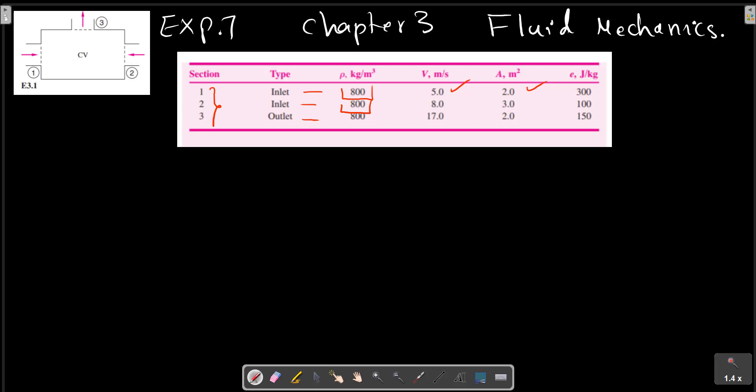The flow properties at each section are tabulated. We need to find the rate of change of energy of the system.